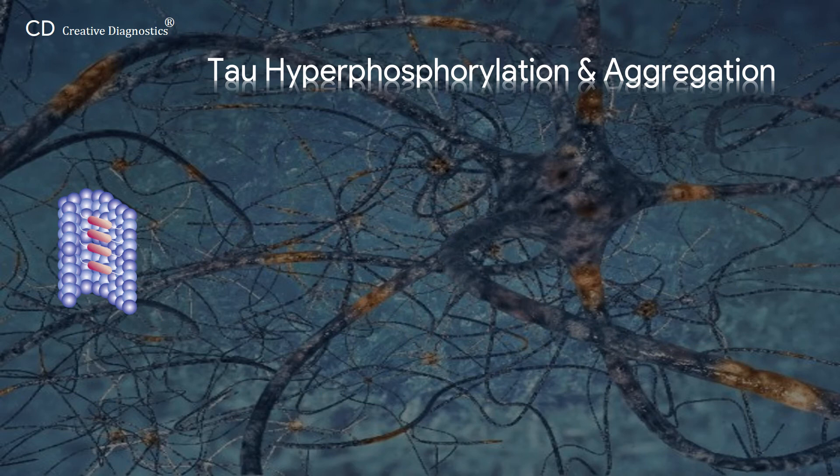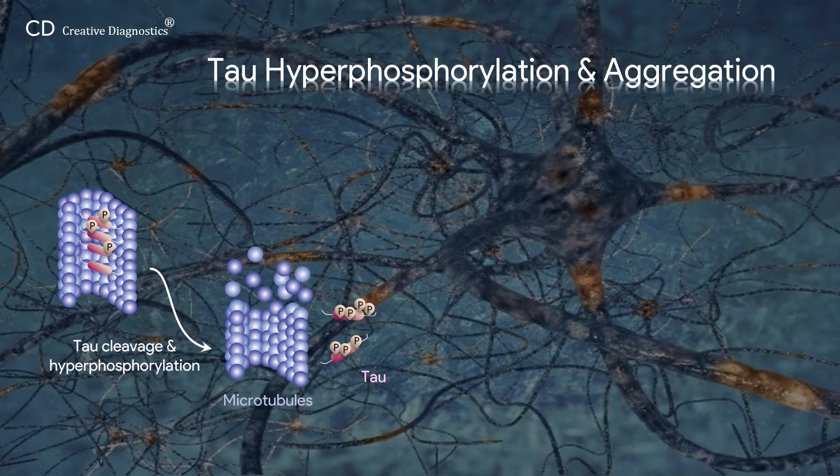Under physiological conditions, Tau phosphorylation supports to maintain cytoskeletal structure. However, increased Tau phosphorylation, or Tau hyperphosphorylation, reduces its affinity for microtubules leading to cytoskeletal destabilization.